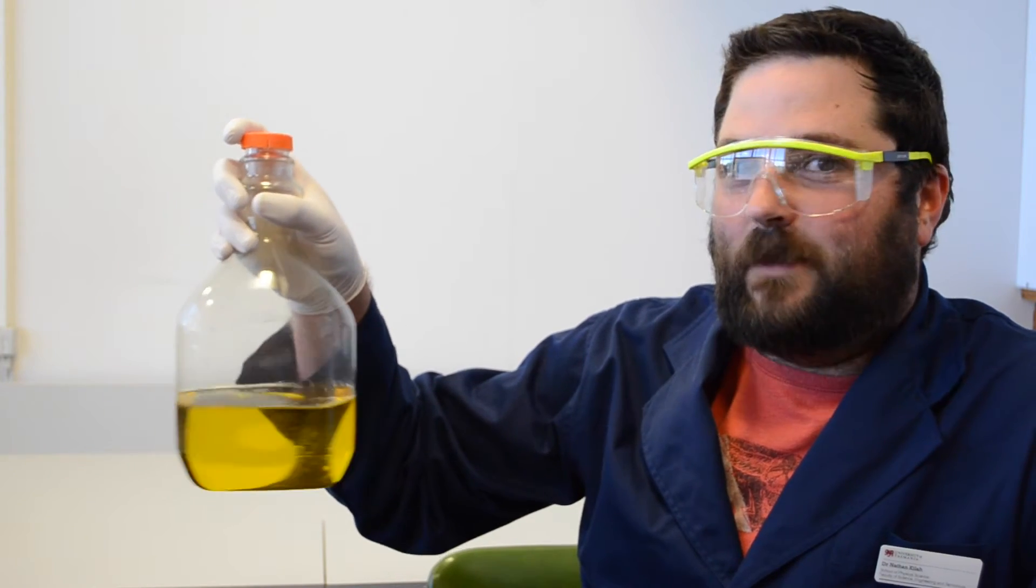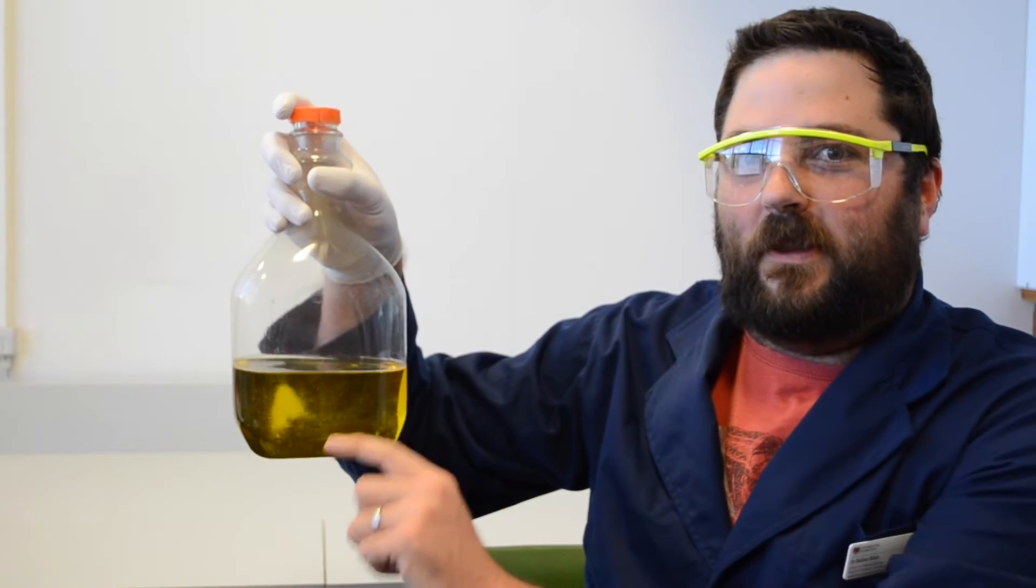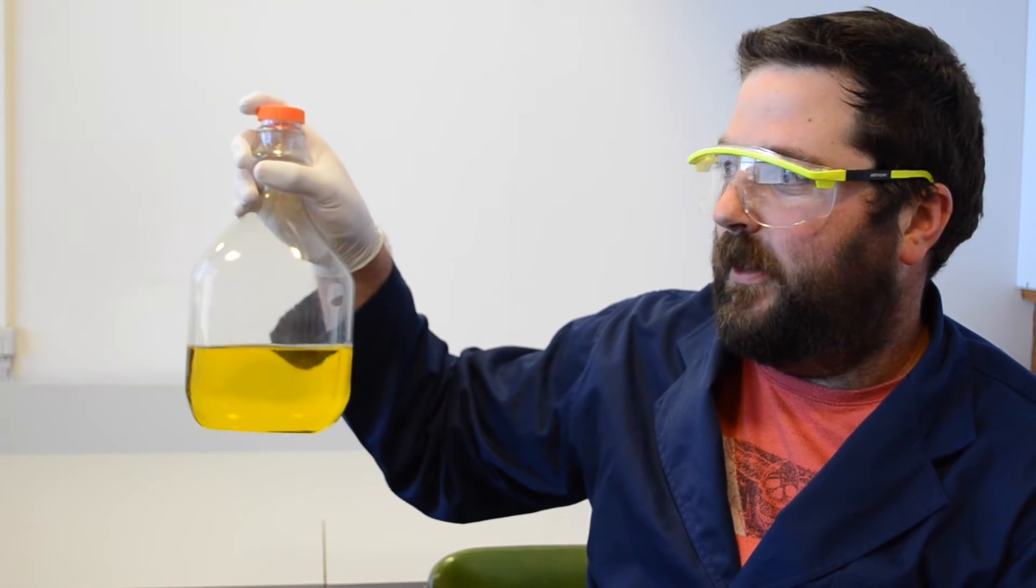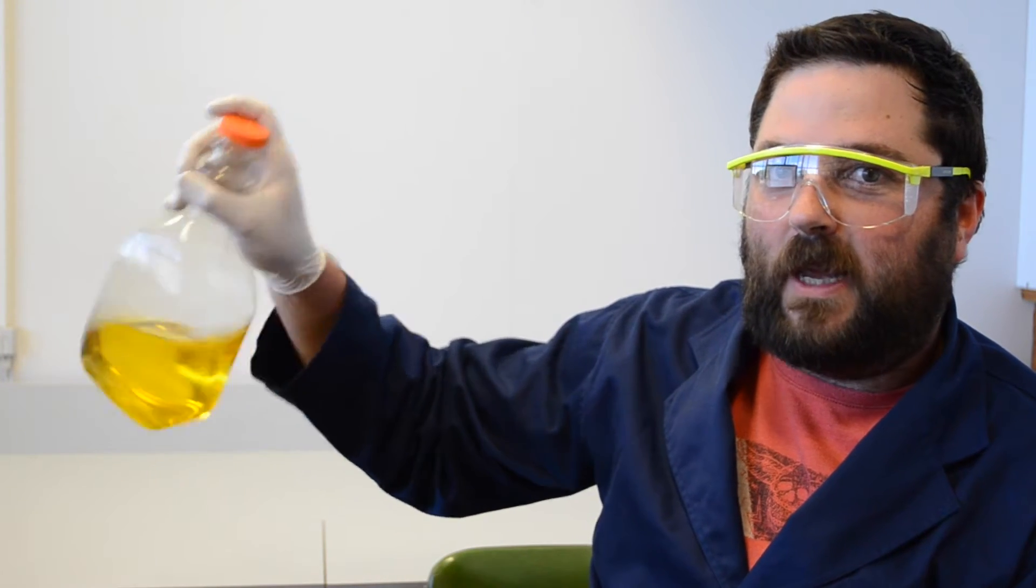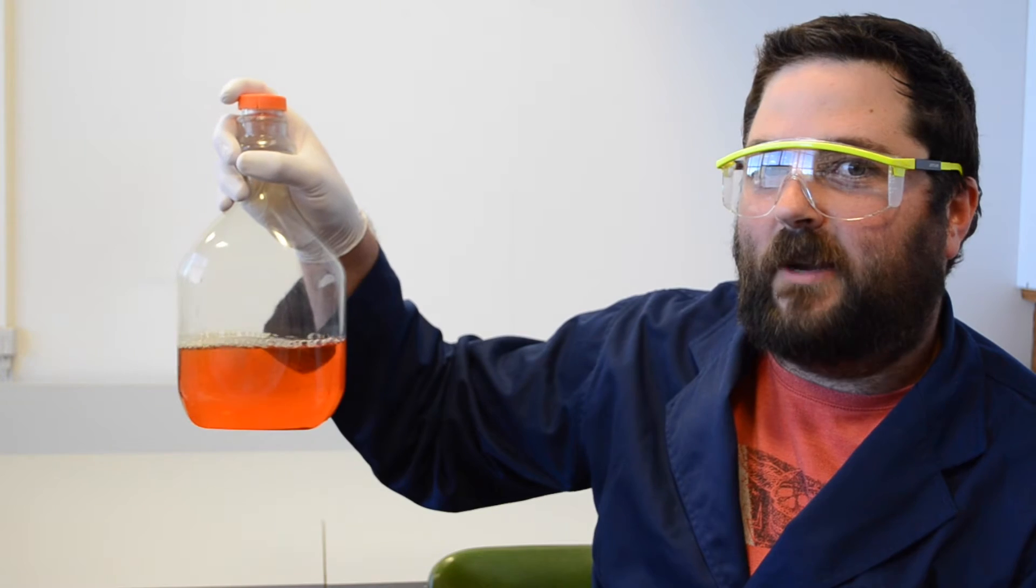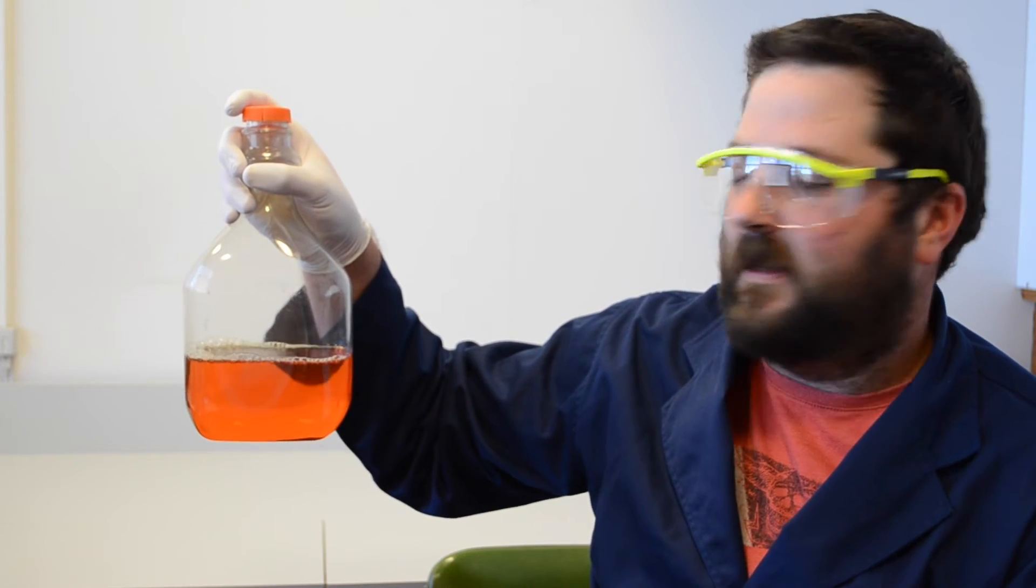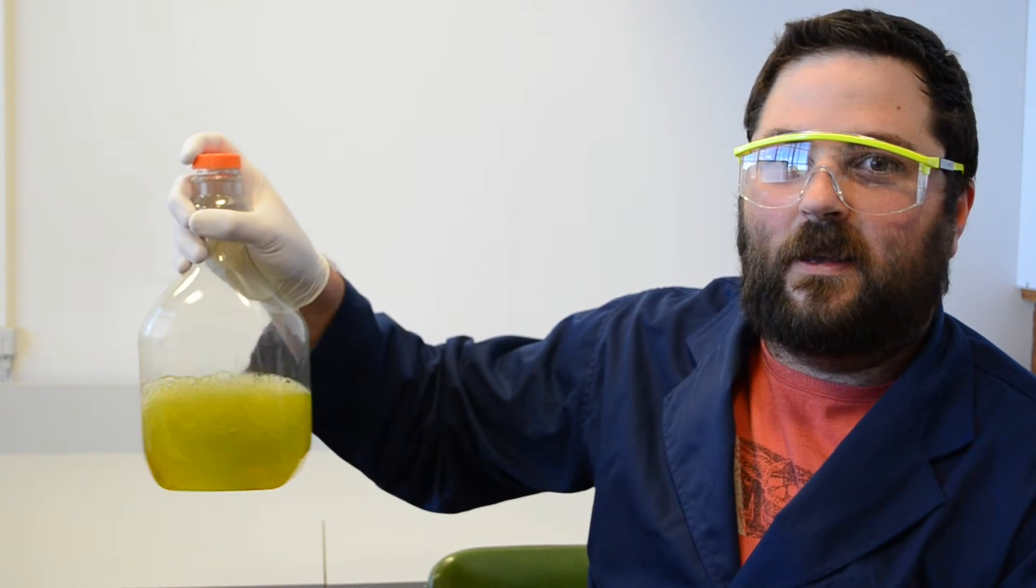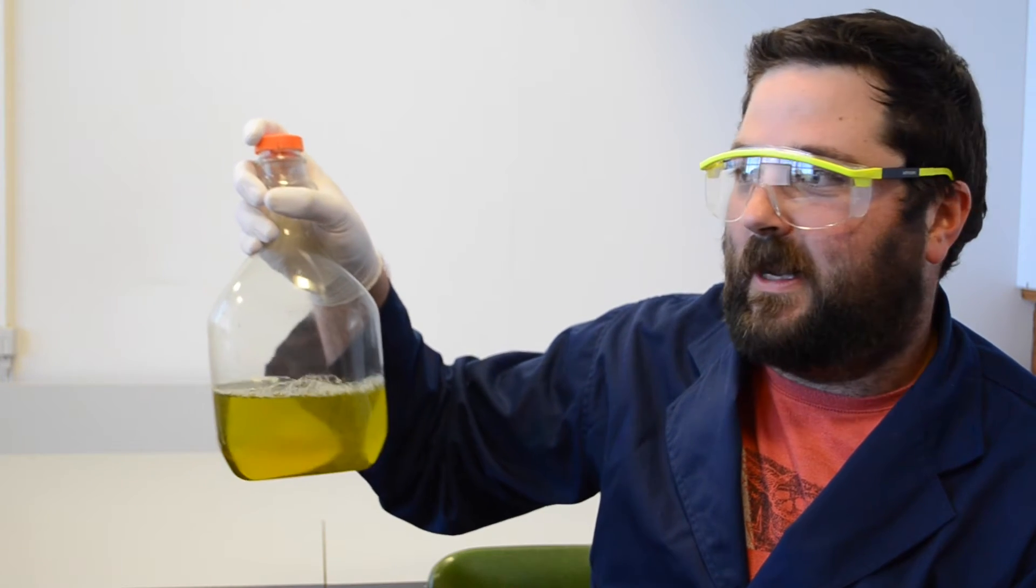Now as I shake the bottle, I'm mixing oxygen from above the solution into the liquid below. With a small shake, I mix in a small amount of oxygen, giving the red color. And with a larger shake, I mix in even more oxygen to give the green color.